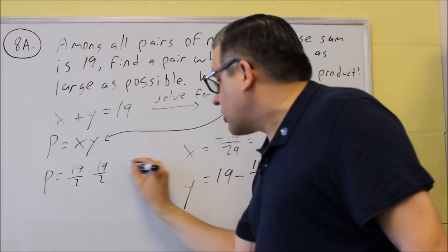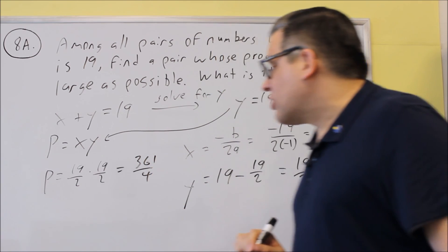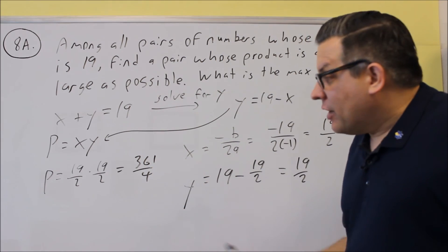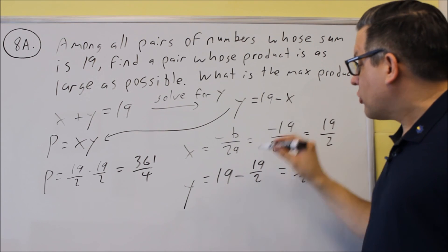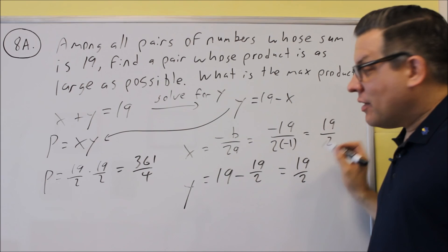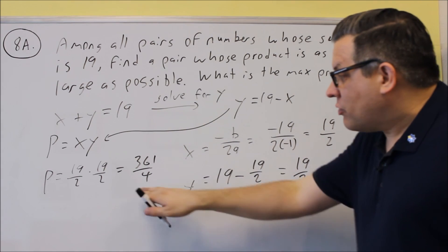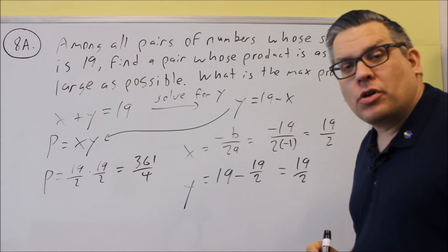You'll multiply across the top, across the bottom, and you'll get 361 fourths. And that would be the actual maximum product. So we did the vertex formula. We found the pair of numbers, 19 halves and 19 halves. And this right here, 361 over 4 would be your product.